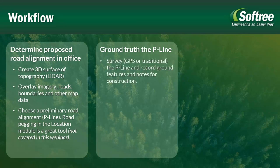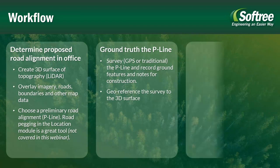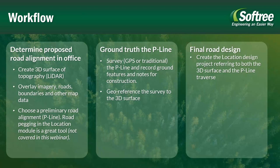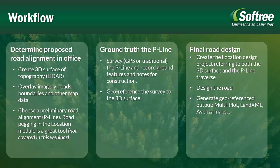Out in the field, you're going to collect some additional survey data — whether that's GPS or a more traditional compass and clino type survey. Record ground features and additional notes for construction. We're then going to geo-reference that survey to our 3D surface. In our final step, we'll complete the road design — creating a location design that refers to that 3D surface as well as the P-line traverse. We can generate geo-referenced outputs, whether that's multi-plot, land XML with slope stakes, or geo-referenced events and maps.